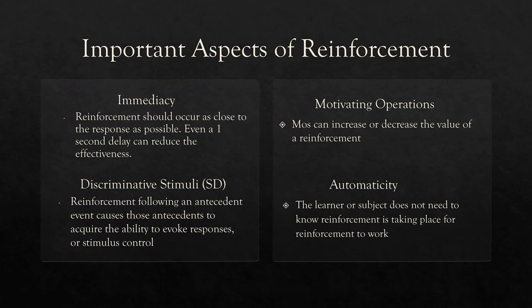Important aspects. Let's go over a few very important aspects of reinforcement. First, immediacy — reinforcement needs to occur as close to the response as possible. Even a one second delay can reduce the effectiveness. You might have heard the term contiguity; that just means the closeness of the two. So the response occurs, reinforcement has to occur immediately if possible, and if not immediately, then as close to immediately as possible. Even a one second delay can reduce the effectiveness. If you're waiting 10, 15, 20 seconds to deliver reinforcement, it's just not going to be the same.